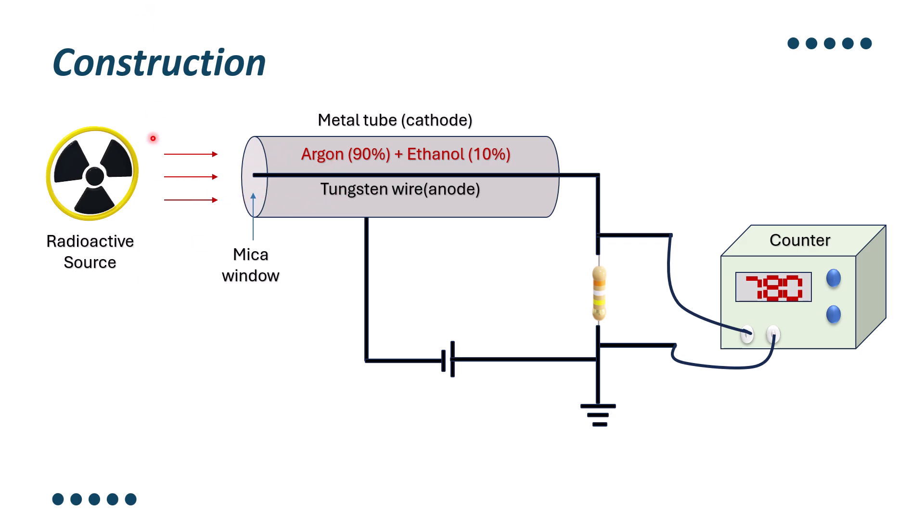When radiations will enter into the metal tube, they will ionize the argon gas. Due to the ionization of the argon gas, positive and negative ions will get separated.